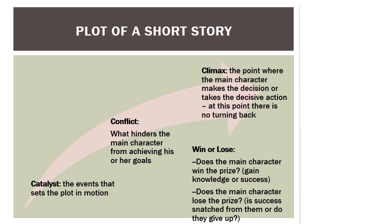Looking at the plot of a short story: the book shows pictures and diagrams of plot, the triangular plot diagram, but I want to mainly look at a very simple version. The catalyst is the event that sets the story in motion. Conflict is what hinders the main character from achieving their goals — the struggle within themselves. The climax is the point where the main character has to make a decision or take a decisive action; at this point there's no turning back. Then we ask: does the character win or lose the prize? Do they gain knowledge, success, or an epiphany moment? Or is success snatched away from them? Do they give up? We're interested in how characters react to conditions provided in the story.